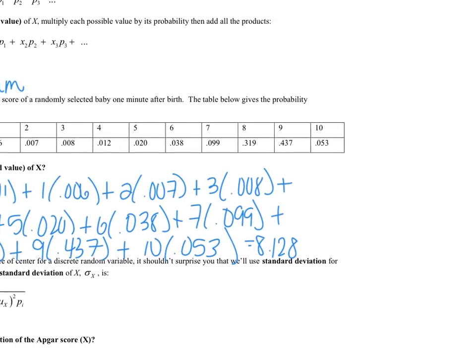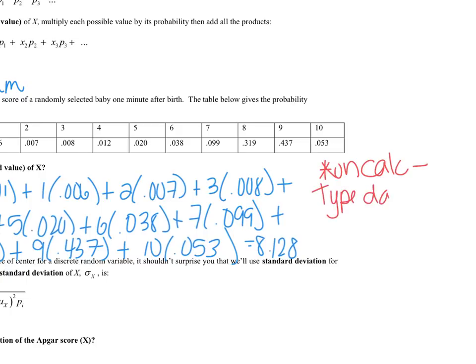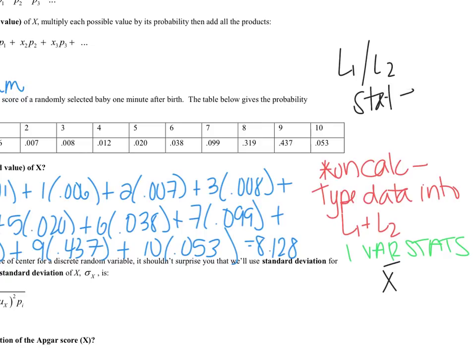In our calculators we can do this as well. You're going to type the data into L1 and L2, and then after that you're going to press 1-var stats and then you should get the mean. So that's going to be the mean in our calculator. Just to remind you guys where all this stuff is, to type stuff into L1 and L2 you just press stat, edit.